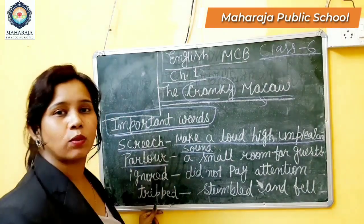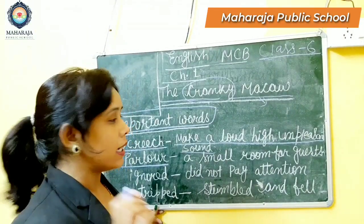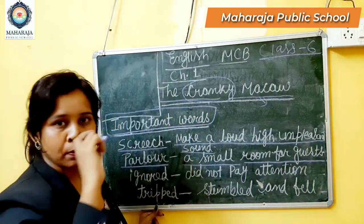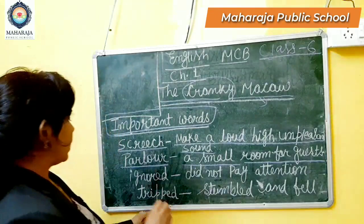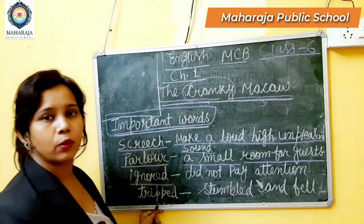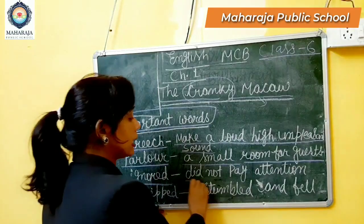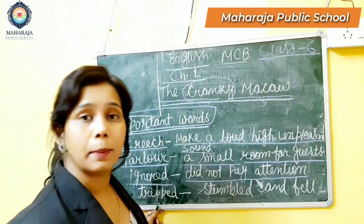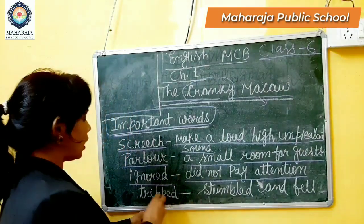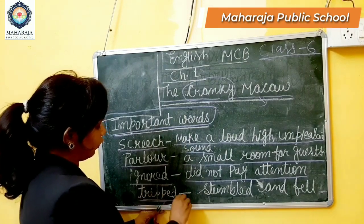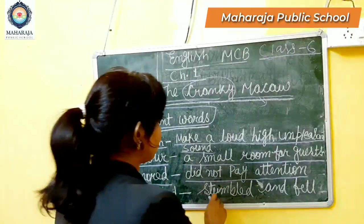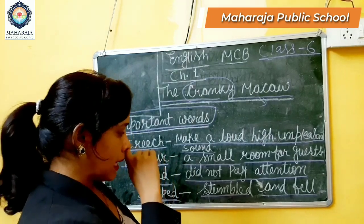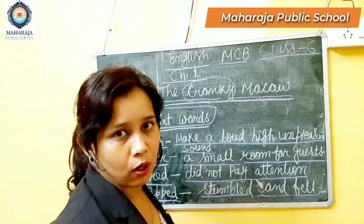The second word is 'parlor' — and it is not a beauty parlor. Parlor means a small room for guests. The third word is 'ignored,' which means did not pay attention. The fourth word is 'tripped,' which means stumbled and fell — 'fell' being the past tense (V2) of 'fall.'